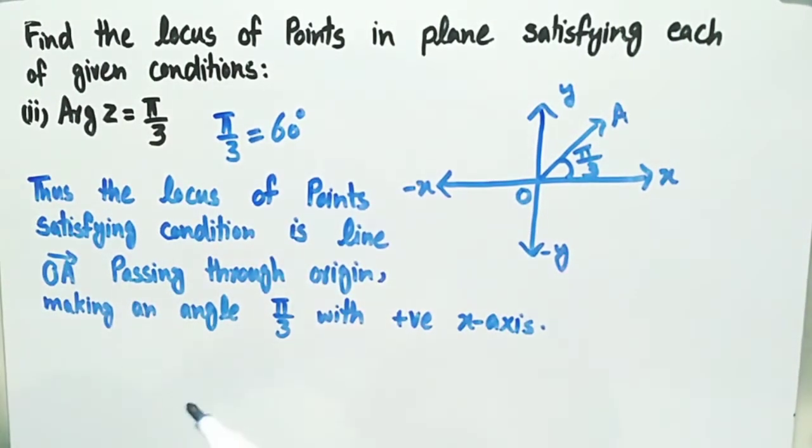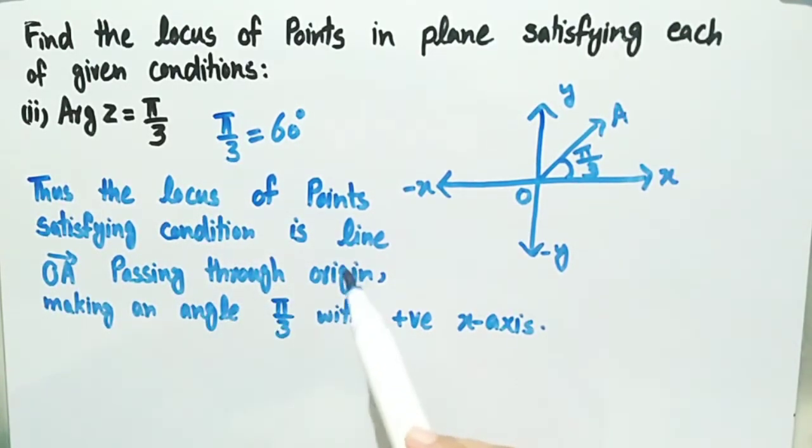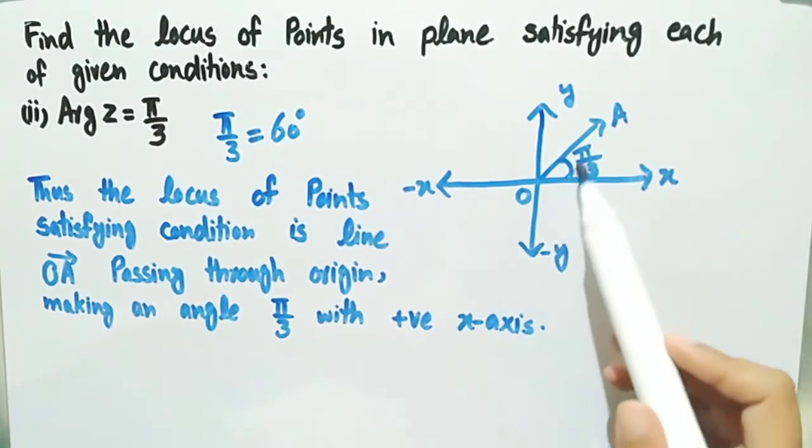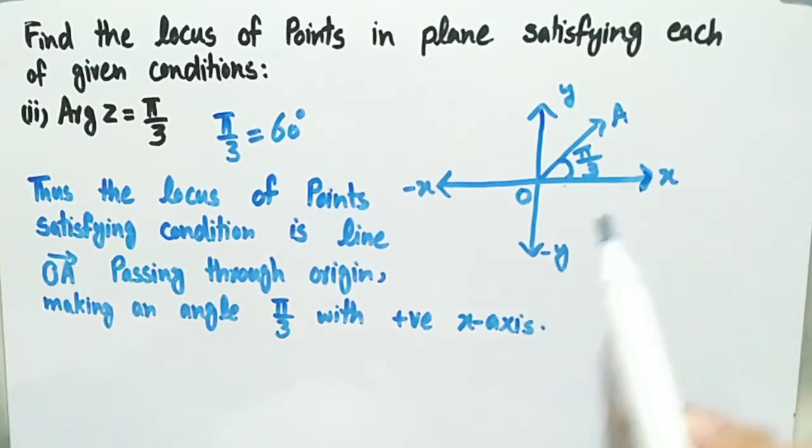So the locus of the point satisfying given condition argument of z equals pi by three is the line OA passing through origin making an angle pi by three with positive x-axis.